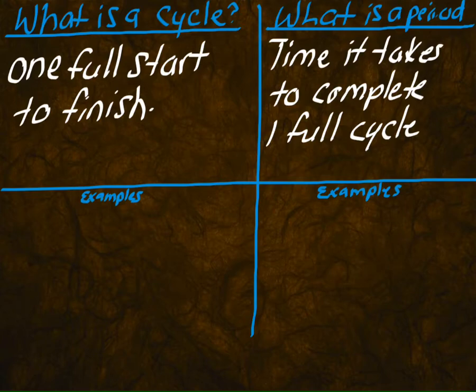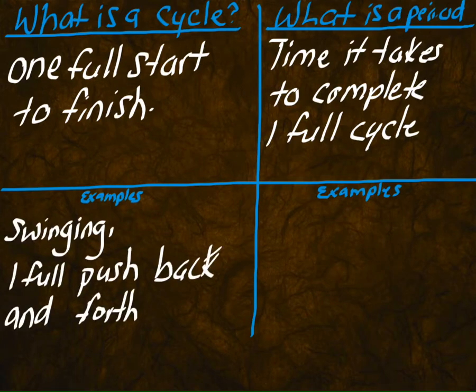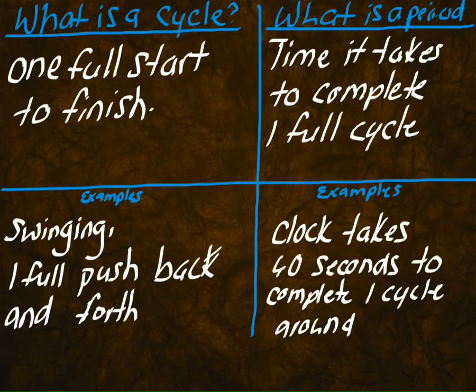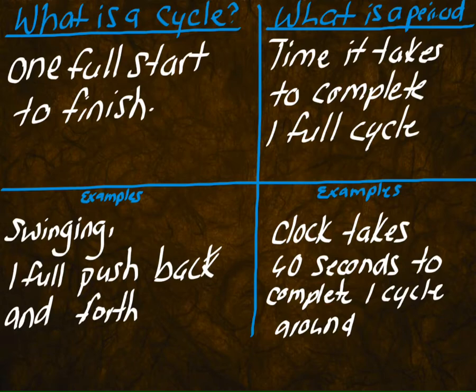Here is an example. Swinging — one full push back and forth. Or you can even say a clock: one time all the way around the clock, 60 seconds all the way around the clock. What is a period? A period is the time it takes. So for this swinging example, how long — if I took my stopwatch out and timed you — would it take for you to do one full push back and forth? And for the clock, it obviously takes 60 seconds for the hand to go all the way around.